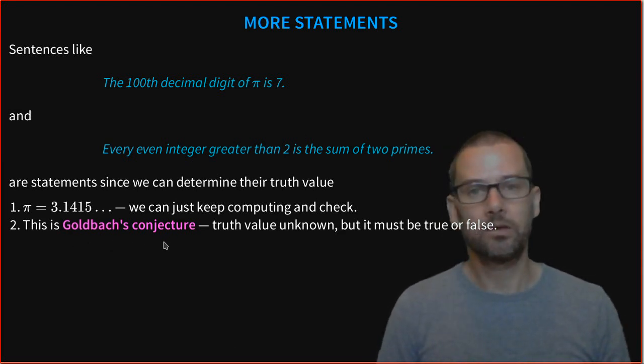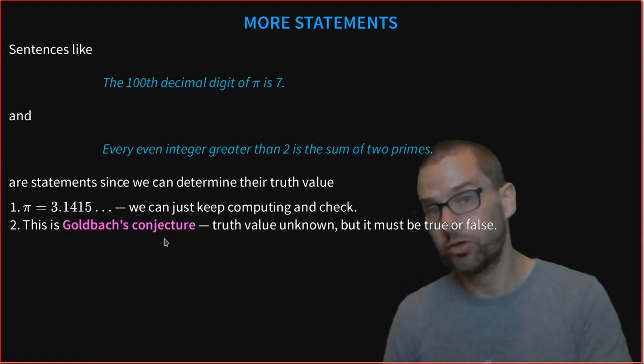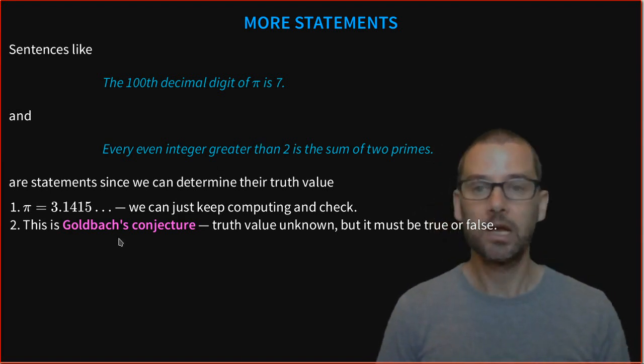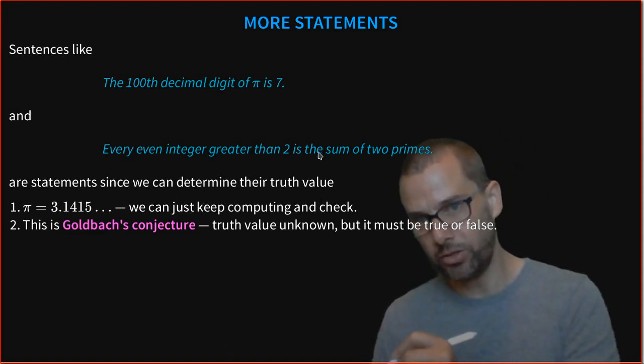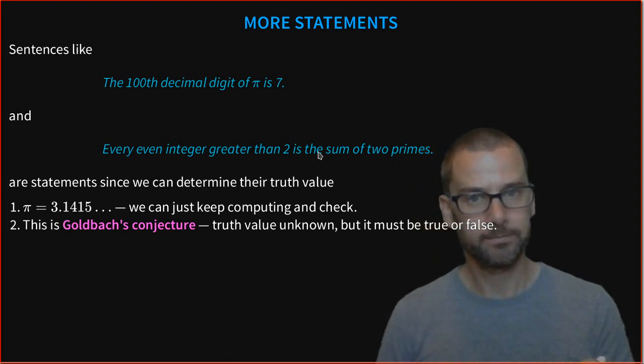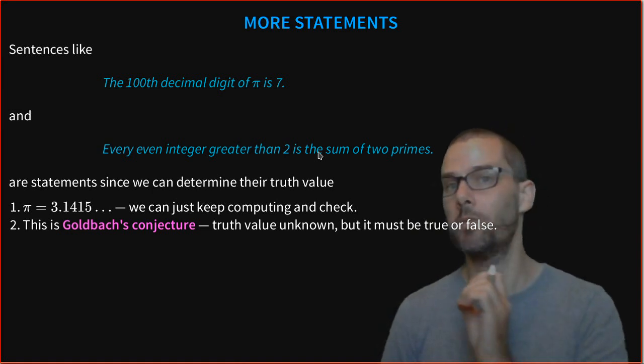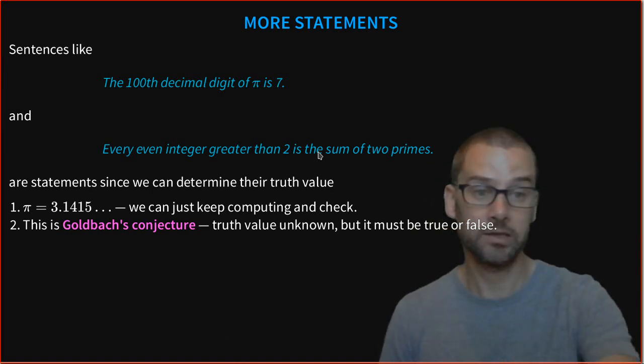The second one is actually not known whether it is true or false. It's a very famous conjecture in mathematics called Goldbach's Conjecture. Its truth value is not known, but it must either be true or be false. So it is actually a statement. Even though we don't know whether it is true or false, we know it must be one of those two. So it is a statement.